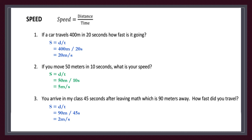First question: if a car travels 400 meters in 20 seconds, how fast is it going? Using the equation S equals d over T, with distance of 400 meters and time of 20 seconds, we get the answer: 20 meters per second.